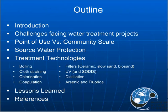Let's talk about the outline for today. We're going to start with an introduction, then go into the general issues facing water treatment projects. Then we'll discuss point-of-use technologies versus community-scale technologies, and source water protection. Then we'll launch into a big discussion about treatment technology: boiling, straining, chlorination, coagulation — the major technologies used on our project sites. We'll wrap up with lessons learned, and there'll be a references page for independent research.